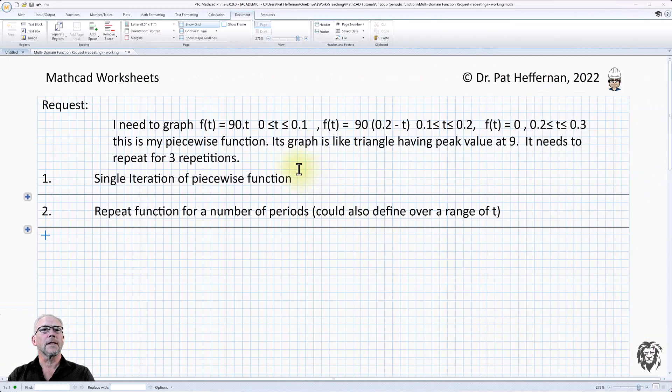So this is the request I got, and it defines the function over three different sections. From t = 0 to 0.1, it has one function increasing linearly as a function of time.